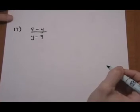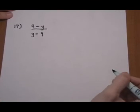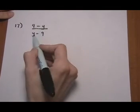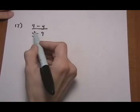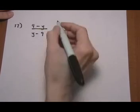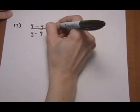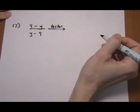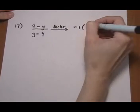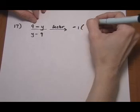And number 17. This comes up once in a while where you have the same terms but they're in a different order and they each have a different sign. Here we have a plus 9. Here we have a minus 9. Minus y plus y. So we're going to do a factor step. To make them have the same signs first of all. Factor out a minus 1. And you can pick either one. It doesn't matter who you factor the minus 1 out of.